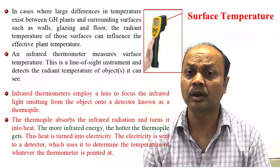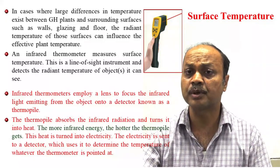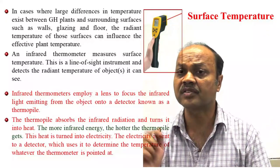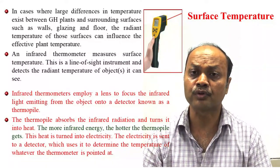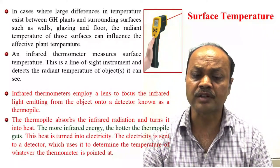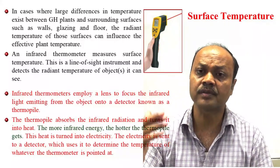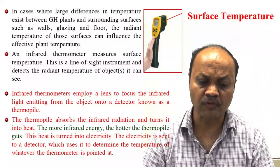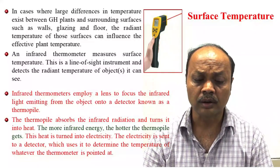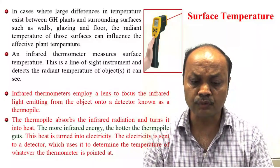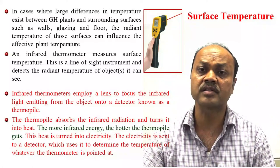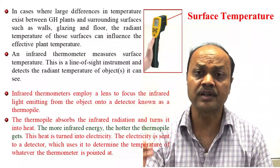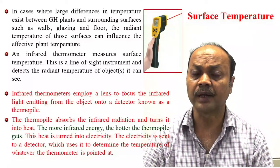In greenhouse, air temperature is normally measured but it is not the right way — leaf surface temperature is more important than air temperature because it directly relates to photosynthesis. To measure surface temperature, an infrared thermometer is used — similar to what was used during COVID. The surface emits infrared light, which is measured by a detector called a thermopile, converting it to heat and then to electrical signal calibrated against surface temperature.